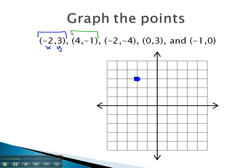Similarly, (4, -1) is 4 on the x, negative 1 on the y. 4 to the right and 1 down.